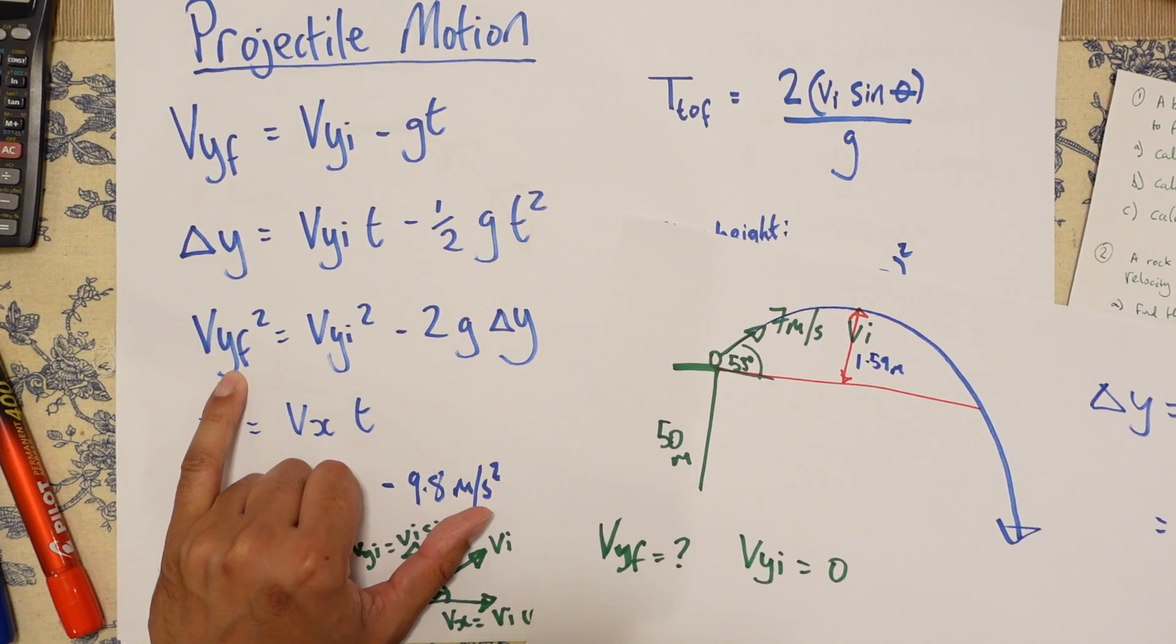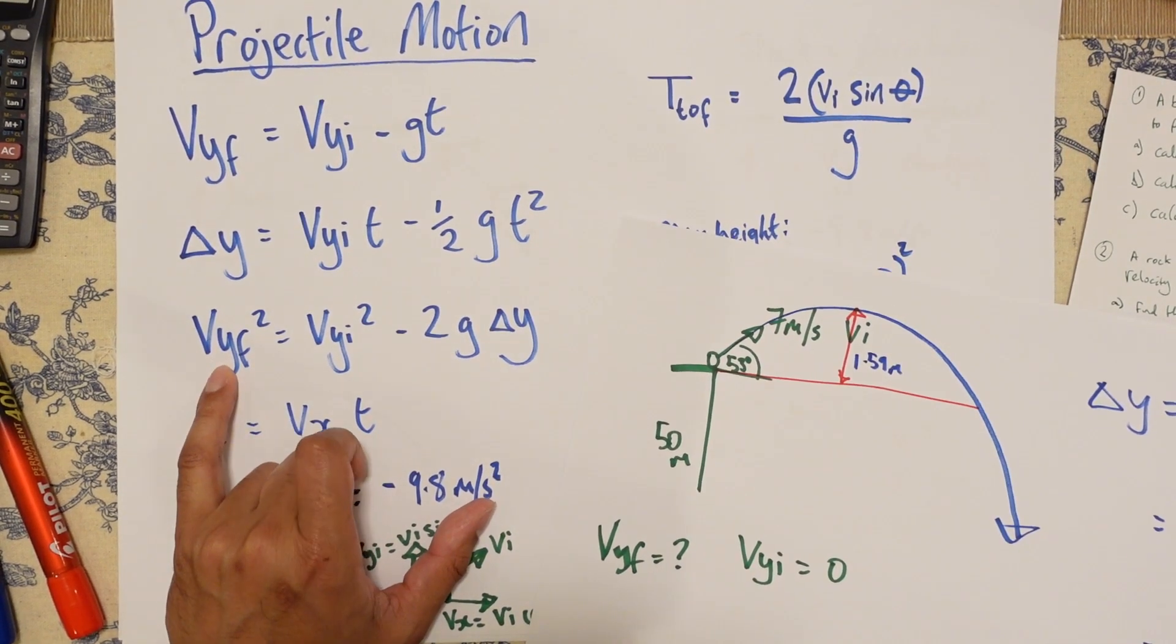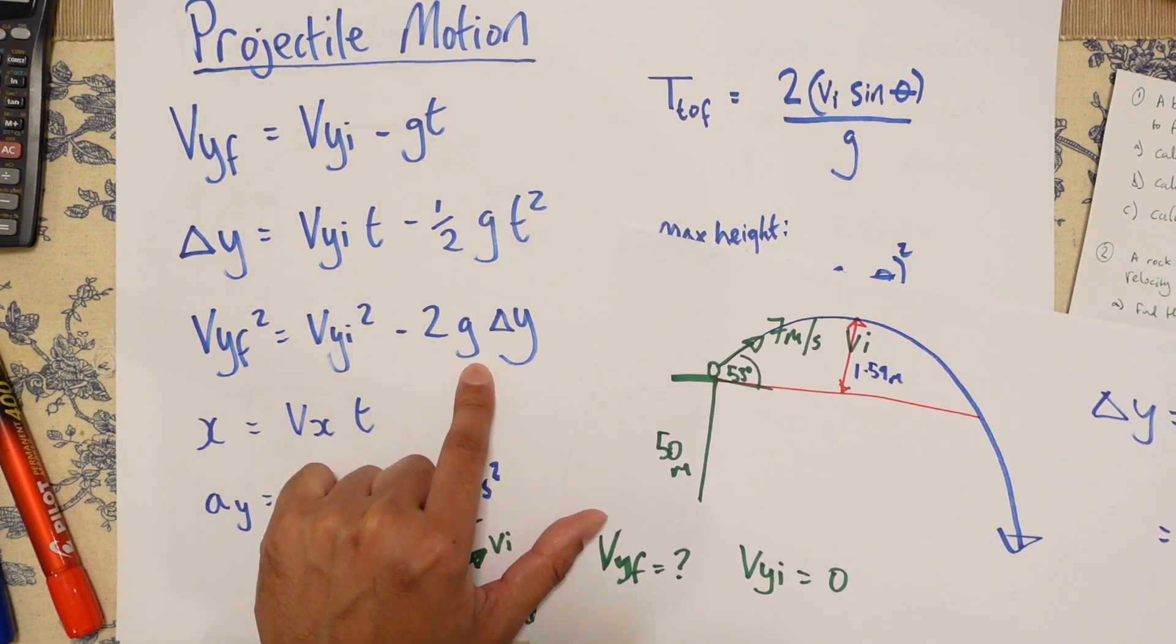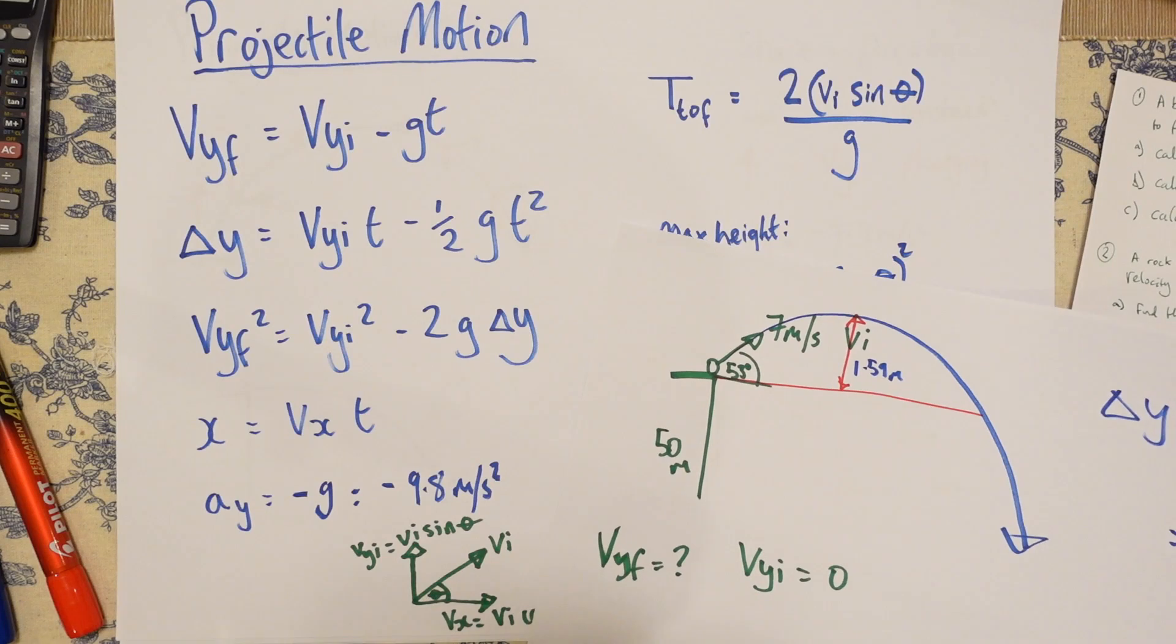We could use this one, VYF squared, because we want to find out this. We know this is zero, so we can cancel that out. We've got G. We've got delta Y. Perfect.